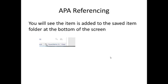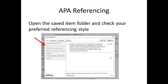Once you've saved your item, you can click on the saved items folder, which will bring up this window here. You can see the list of referencing styles available, so click the one you need — in our case here, APA — then you can just copy and paste that into your paper and the reference is done.